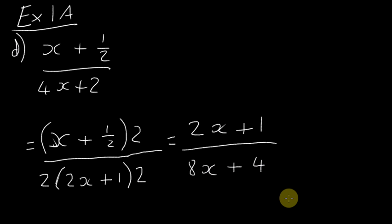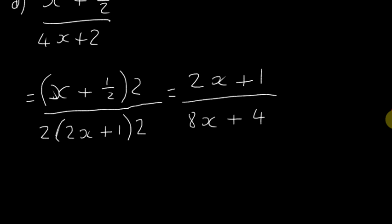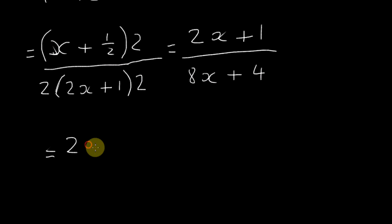This looks a little bit more doable. We can't do anything to the top, but we can do something to the bottom. Let's factorize - we can take 4 out as a factor to get 4 times 2x plus 1.